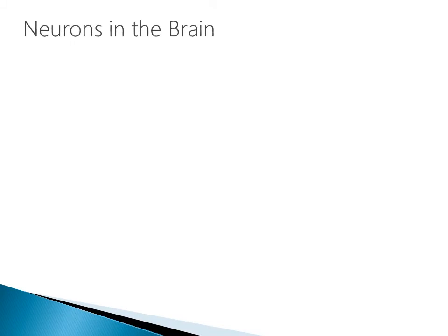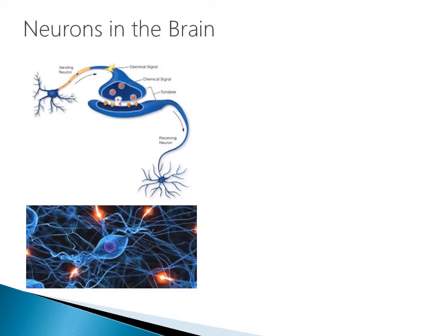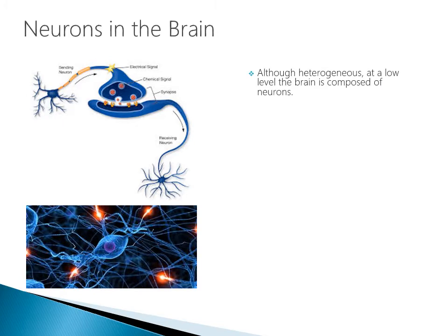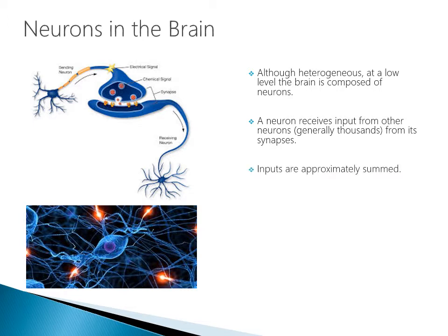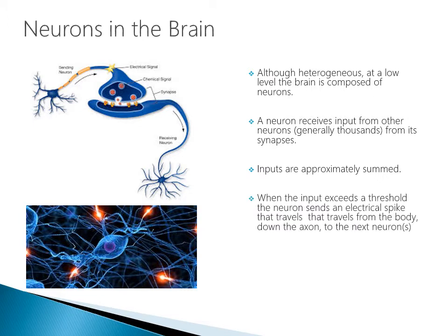Now let's talk a little bit more about neurons in the brain. Although heterogeneous, at a low level the brain is composed of neurons. A neuron receives input from other neurons — generally thousands of them from its synapses. Inputs are approximately summed. When the input exceeds a threshold, the neuron sends an electrical spike that travels from the body down the axon to the next neuron.